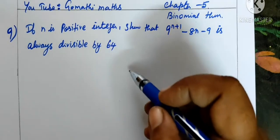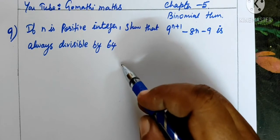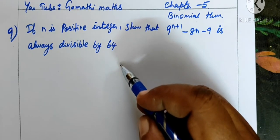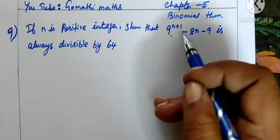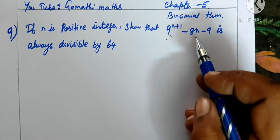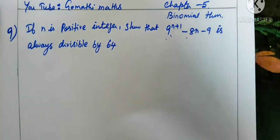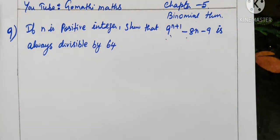Vanakkam, 11th math chapter 5. If n is a positive integer, show that this expression 9 power n plus 1 minus 8n minus 9 is always divisible by 64.